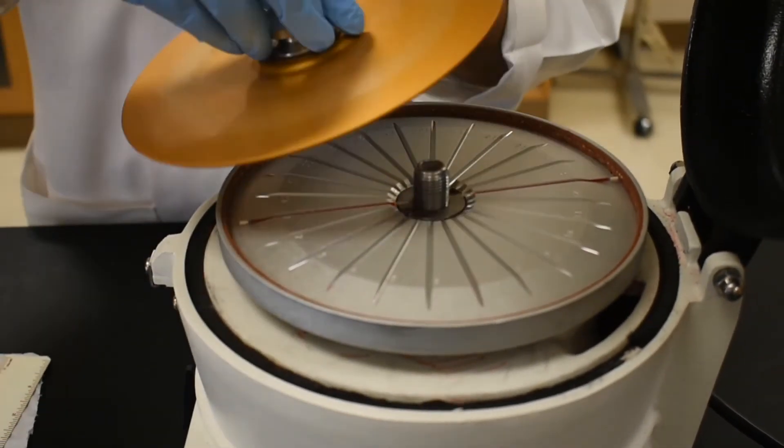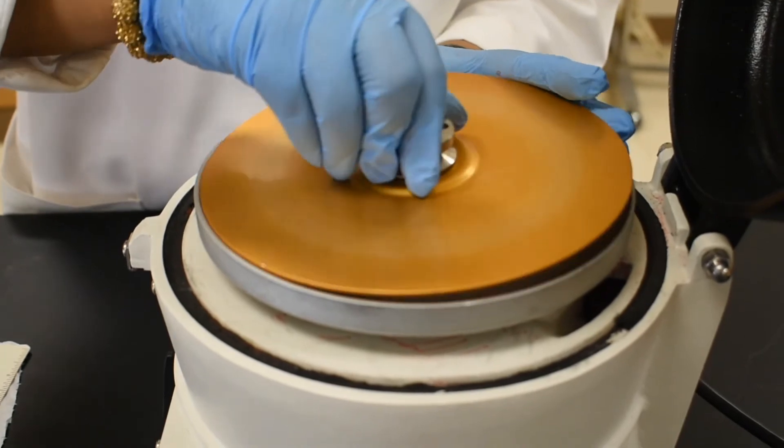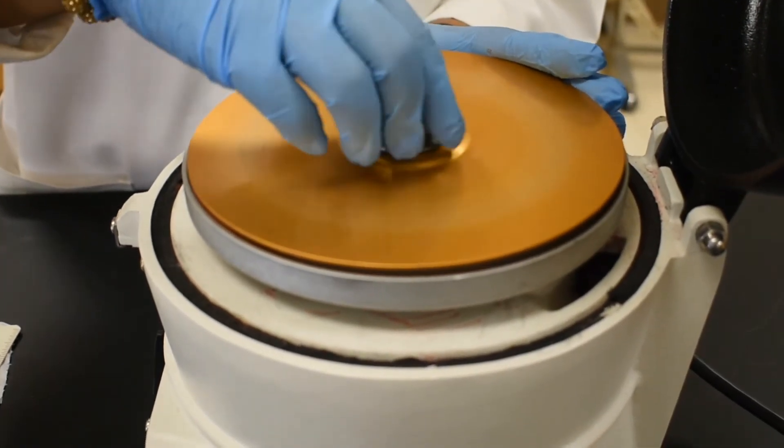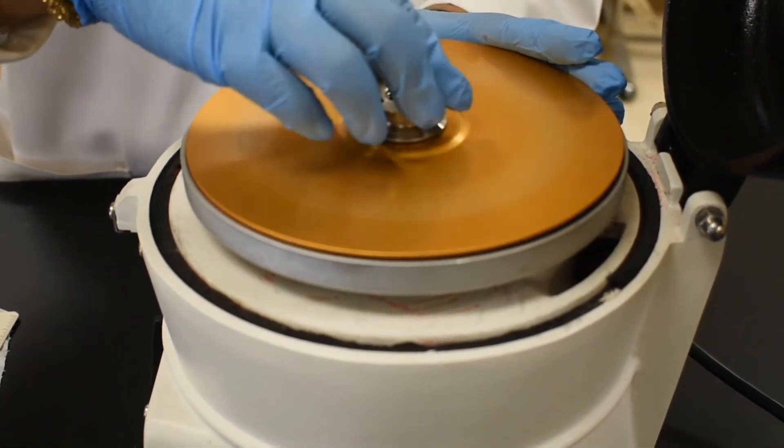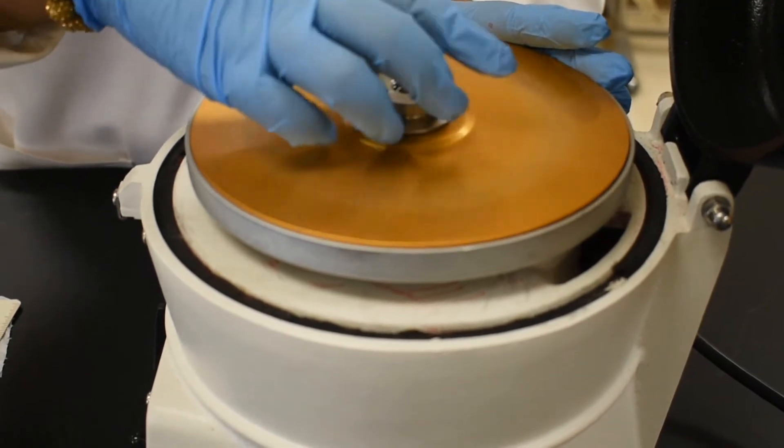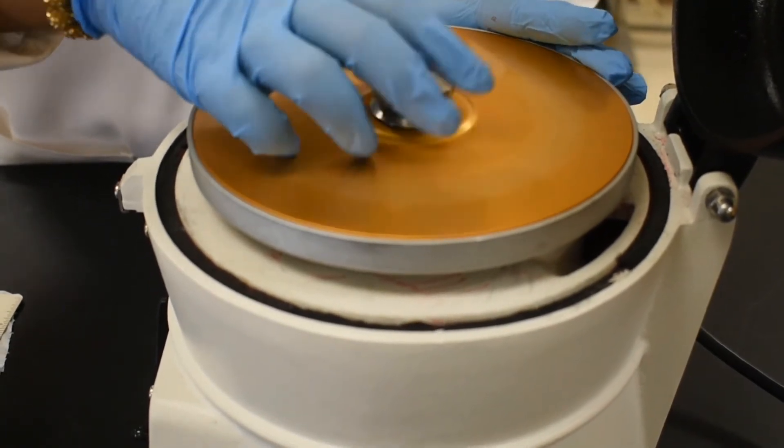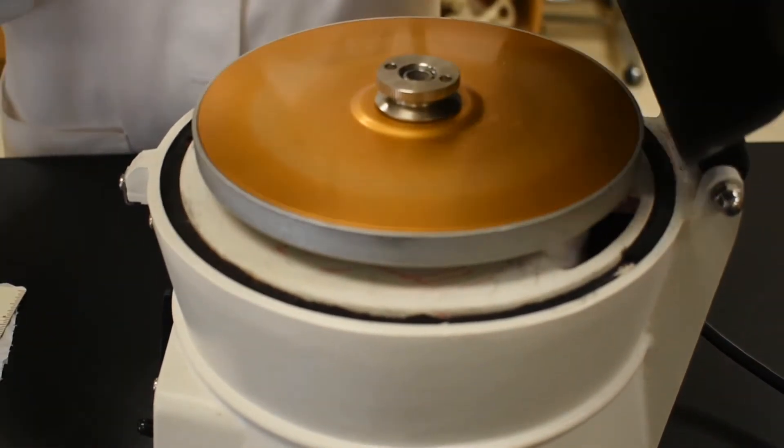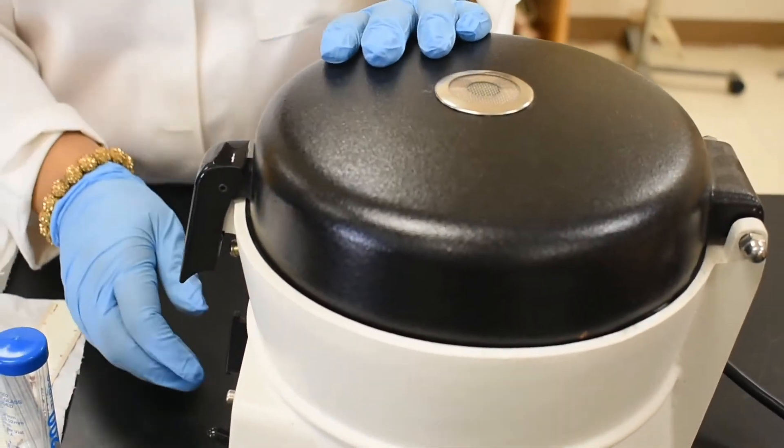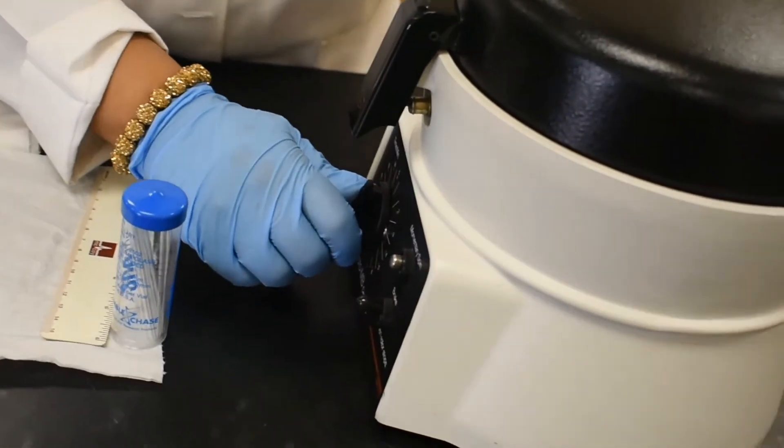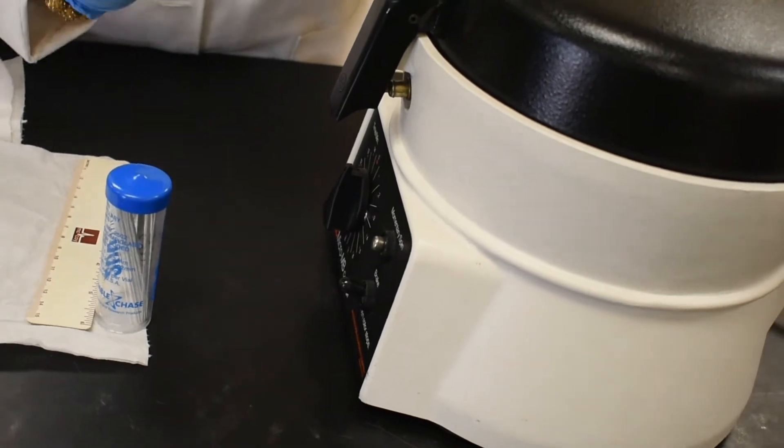We will close that lid. Another important step. If you forget, all you will get are broken pieces of glass once you open the lid. We will close the lid. And now run the centrifuge for five minutes.